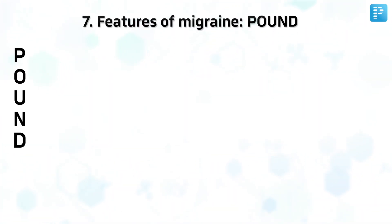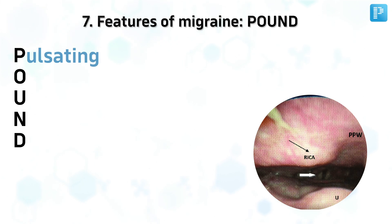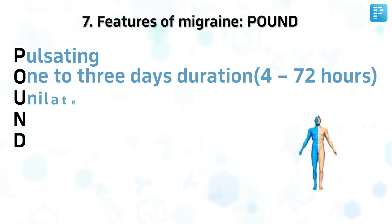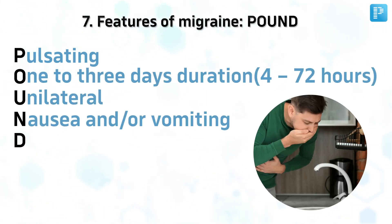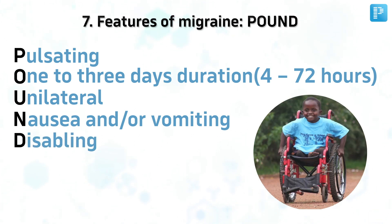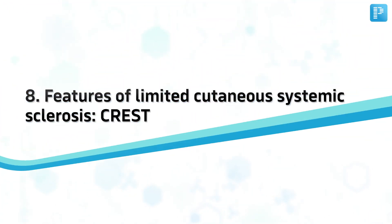Number 7. Features of Migraine: POUND. Pulsating, 1–3 Days Duration, Unilateral, Nausea and/or Vomiting, Disabling.